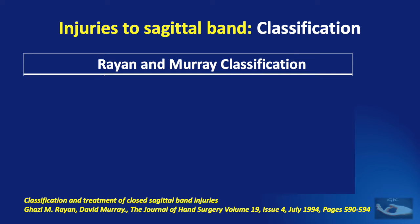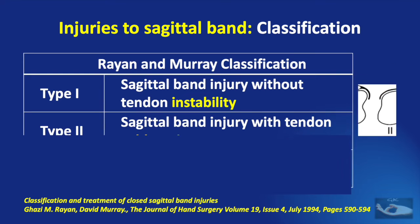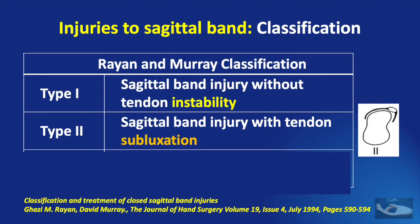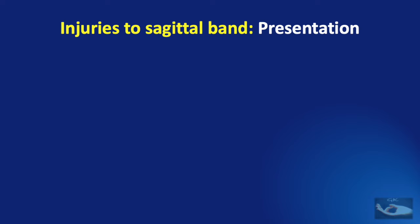Injuries to the sagittal band can be classified into three types according to the Rayan and Murray classification. Type 1 is a sagittal band injury without tendon instability. Type 2 is a sagittal band injury with tendon subluxation. Type 3 is a sagittal band injury with tendon dislocation.